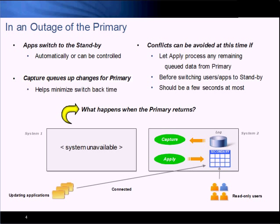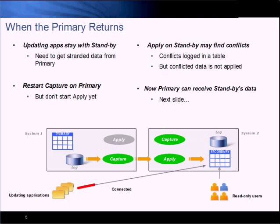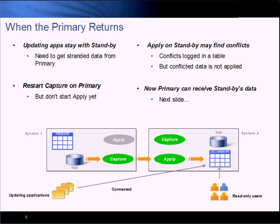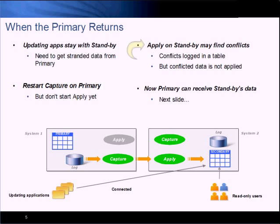So that brings us to the question: what happens when the primary returns? The first thing we're going to do is leave updating apps where they are, at least for the time being. We need to start the capture program on the primary and let it capture any change data that was stranded on the primary when it went down. This gives us a chance to see if any conflicts exist — specifically, it's possible that older changes on the primary don't fit well with newer changes on the standby.